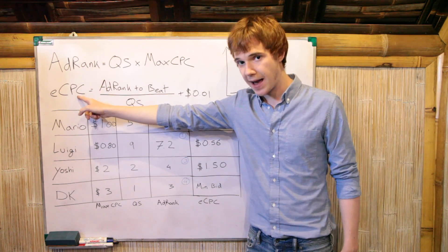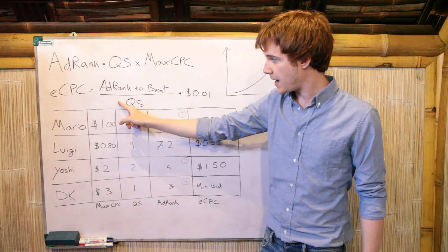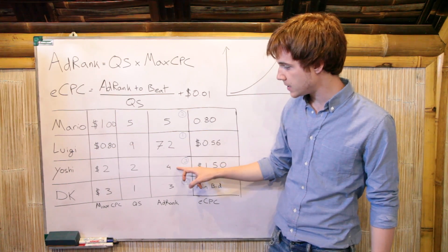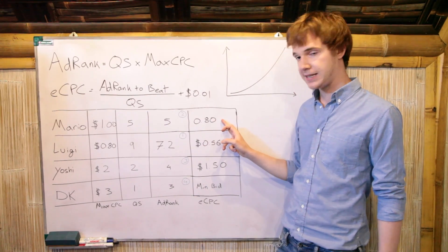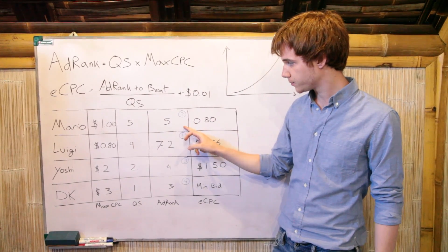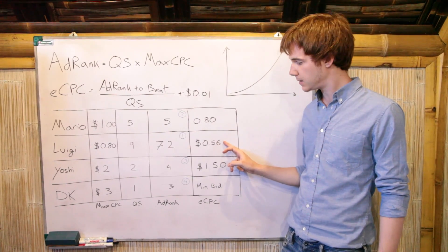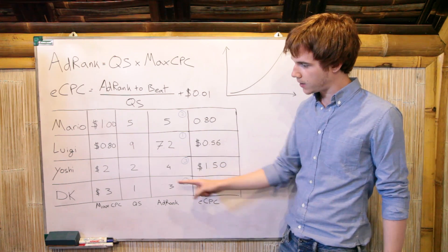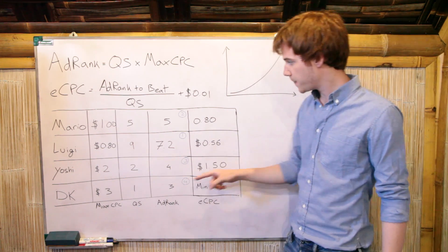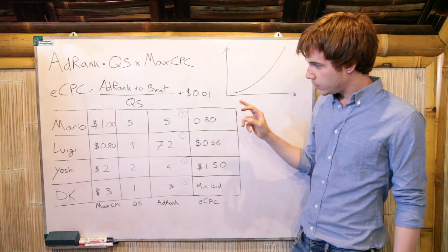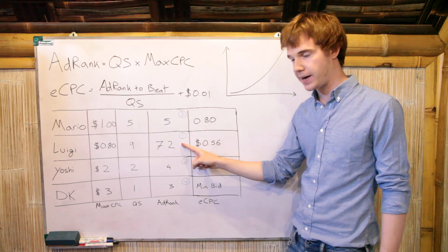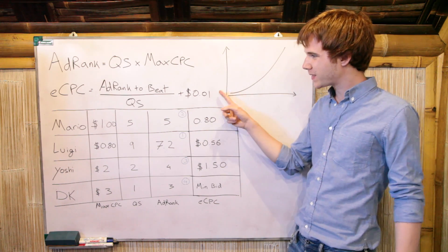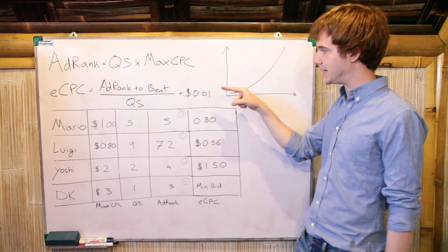And then their eCPC, how much they're actually going to pay, is the AdRank to Beat divided by the Quality Score. So for Mario, number 2, he's got to beat Yoshi, number 3. Yoshi's AdRank is 4, divided by the Quality Score of 5, 80 cents. Luigi has to beat Mario. He's got to pay 56 cents per click. Yoshi, $1.50. And Donkey Kong, whatever the minimum bid is, or Donkey Kong would beat Peach, or whoever is underneath him. And so this is how crazy this is.